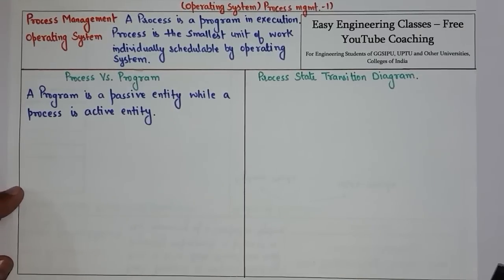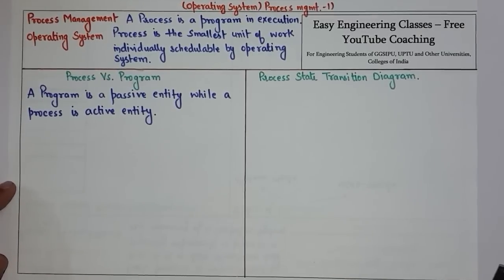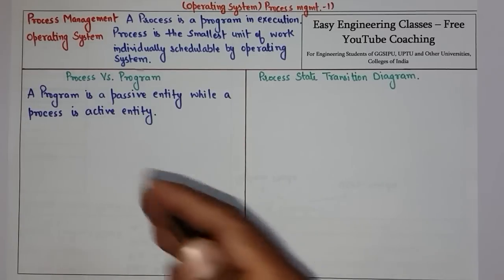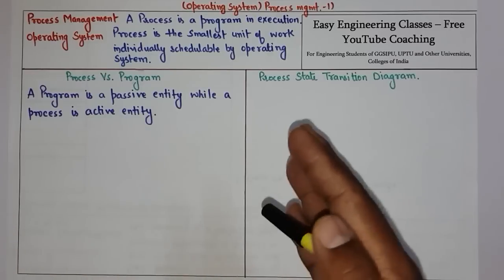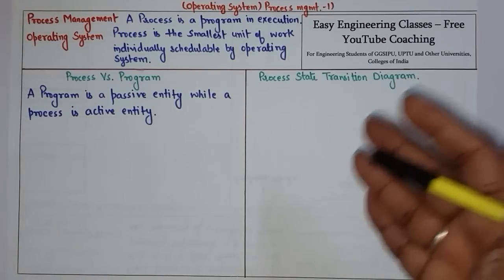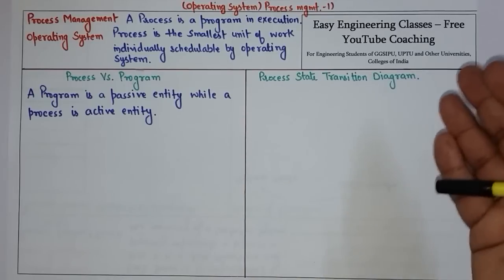Hello everyone. In this video we are going to start with the topic of process management in operating systems. We are going to see different topics like process state diagram, process control block, process switching, and different services of operating system for process management like process creation and so on. These topics will be covered in different videos. In today's video we are going to see the basics of process and the process state transition diagram, which is important because questions about it come frequently in theory exams.